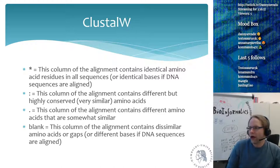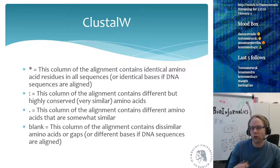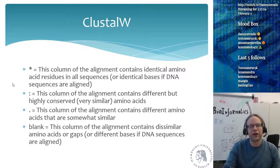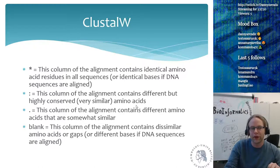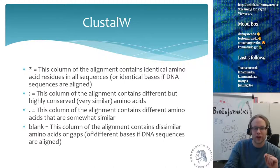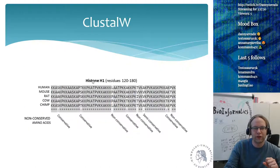When ClustalW gives you the output, it has an additional line underneath telling you what is going on. A star means that the column contains identical amino acid residues in all sequences — or identical bases for DNA. A colon means the column contains different but highly conserved, very similar amino acids. A dot means there's somewhat of a conservation, and when there's nothing, it means there are dissimilarities or gaps.